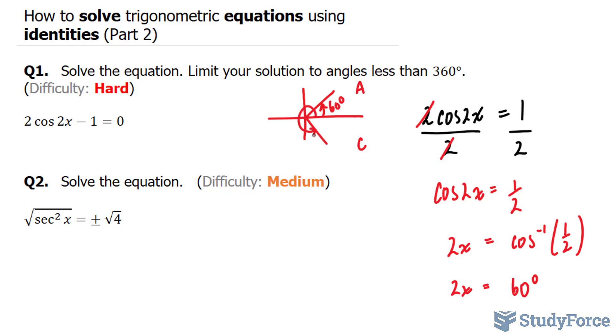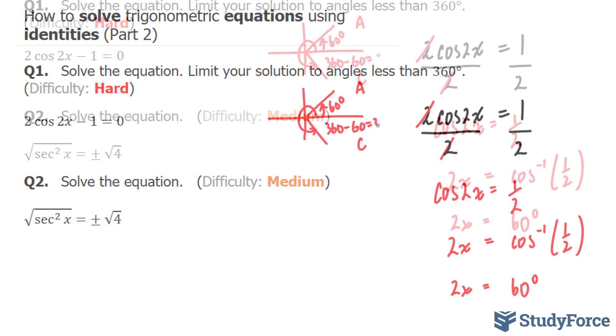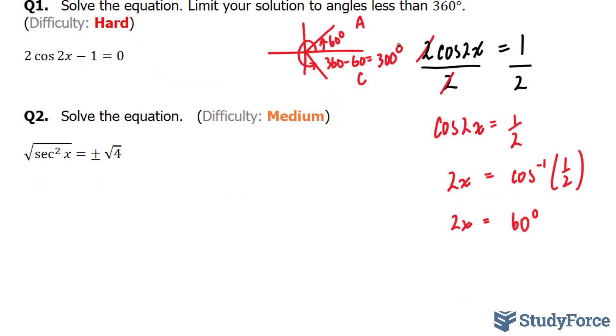Therefore, this bigger angle is 360 minus 60. 360 minus 60 gives us 300 degrees. Writing that down, 300 degrees.